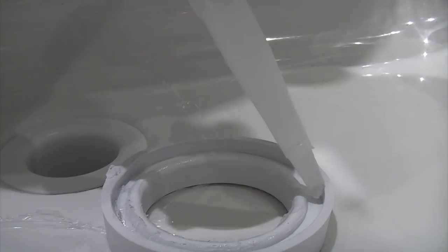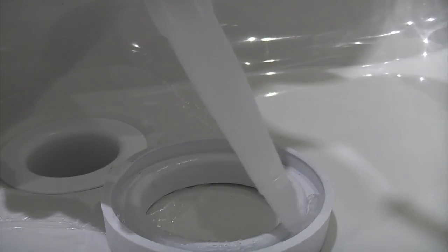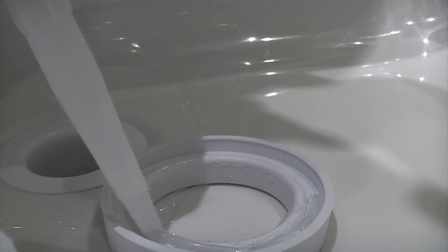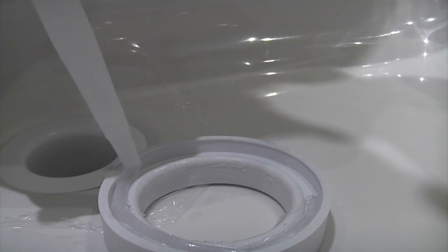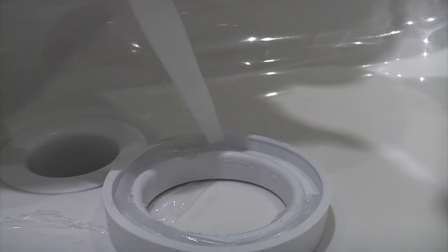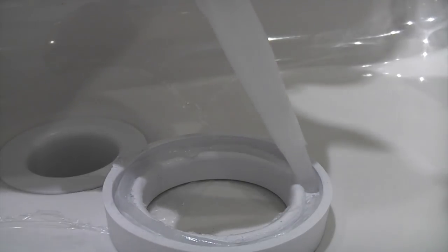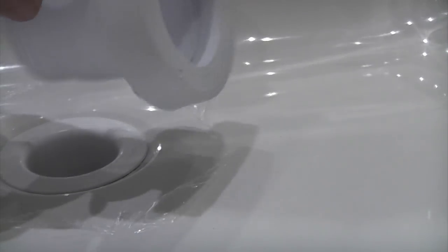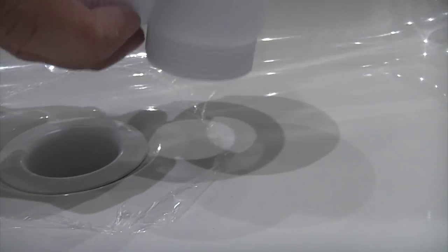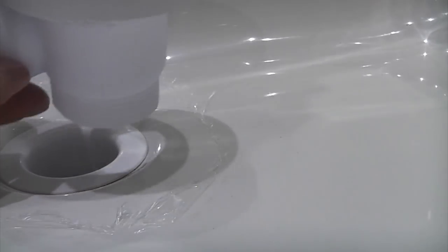I'm now going to run a bead of plumber's gold on the inside of this seal just as a precaution, because the last thing we want is a leak. I've now stuck that onto the end of the waste, and that's now ready to screw up on the underside of the waste fitting.